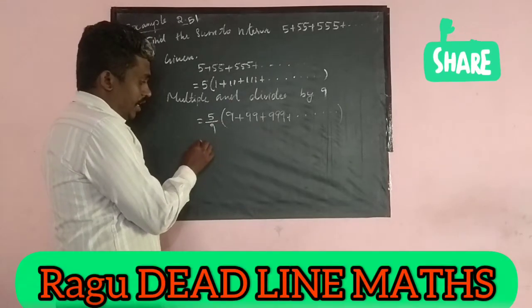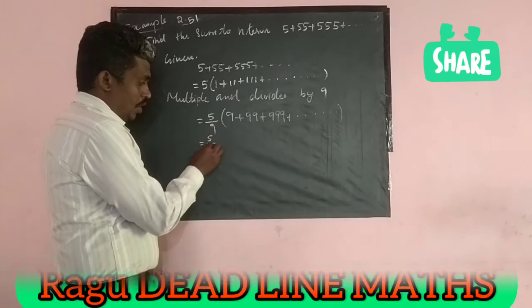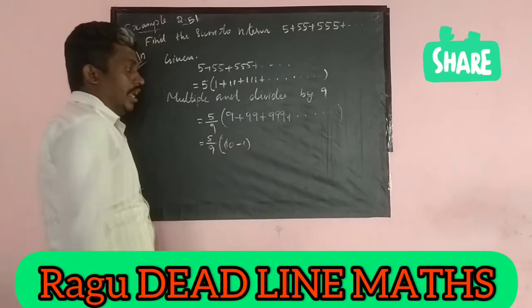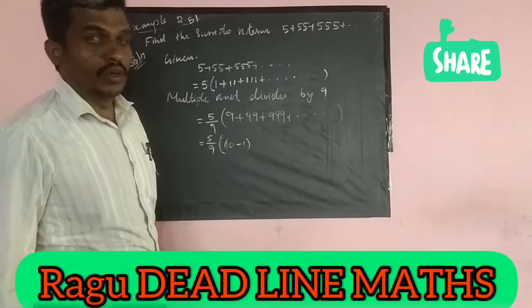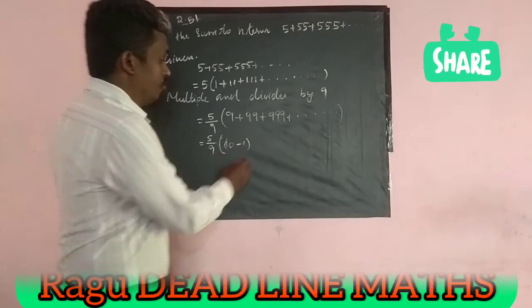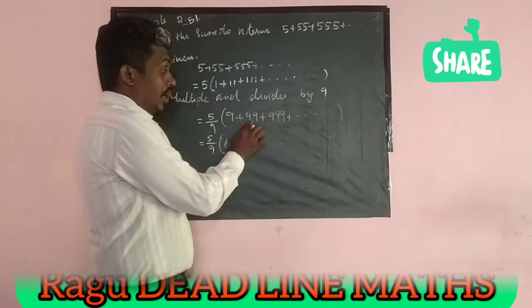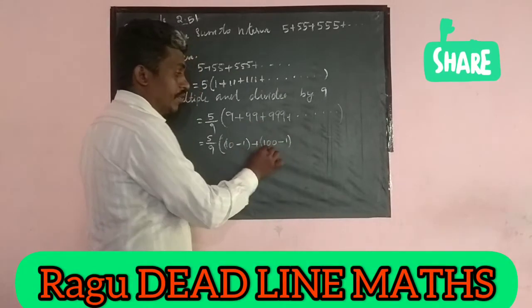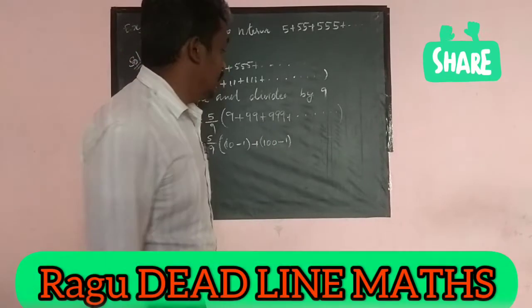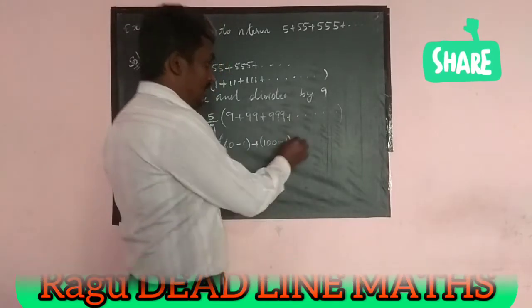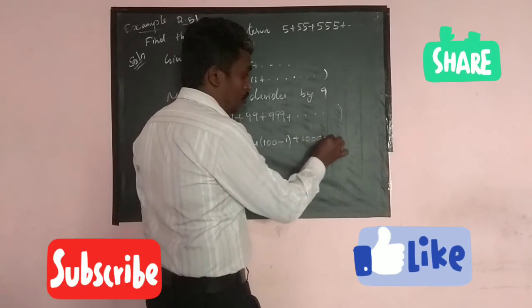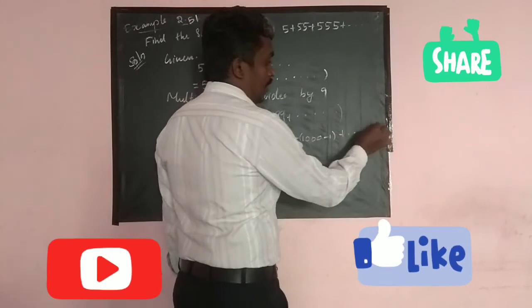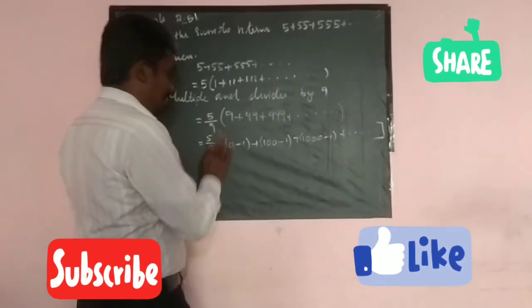Now, 9 is equal to 10 minus 1. Then 99 is equal to 100 minus 1. And 999 is equal to 1000 minus 1, and so on for all terms.